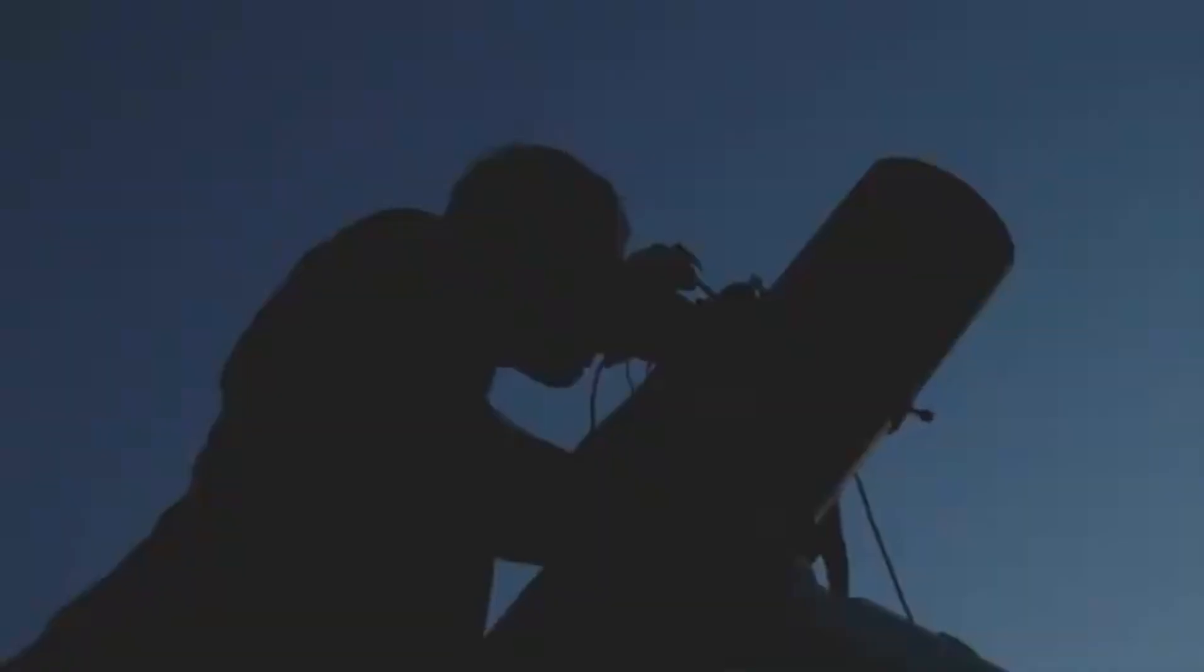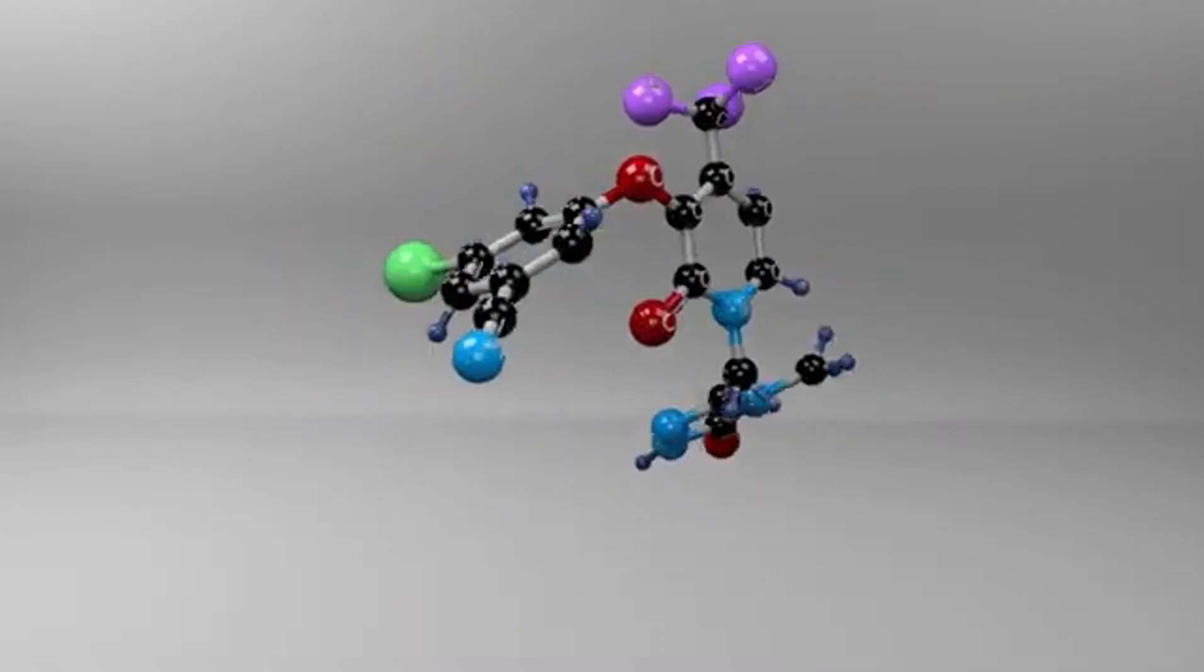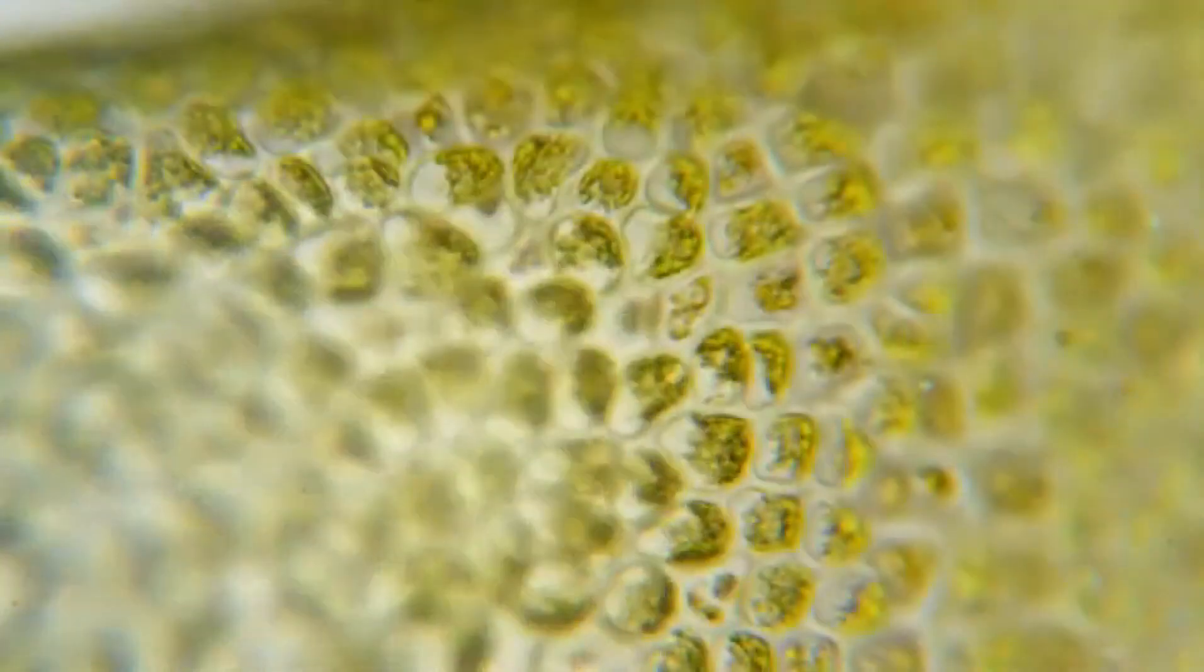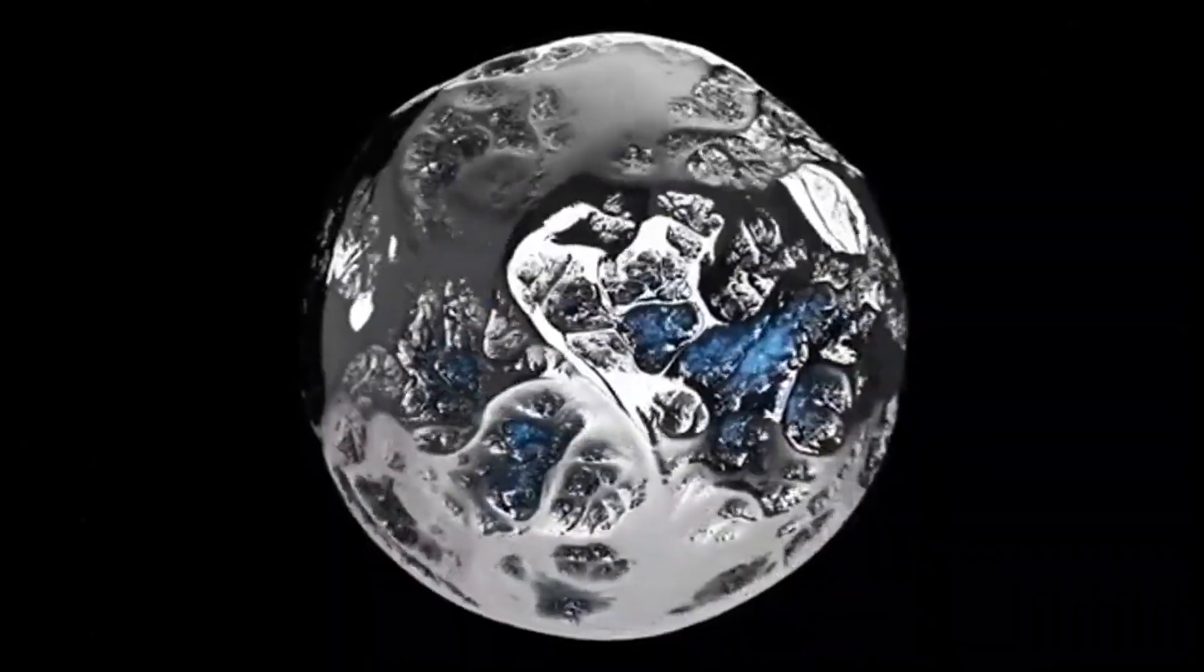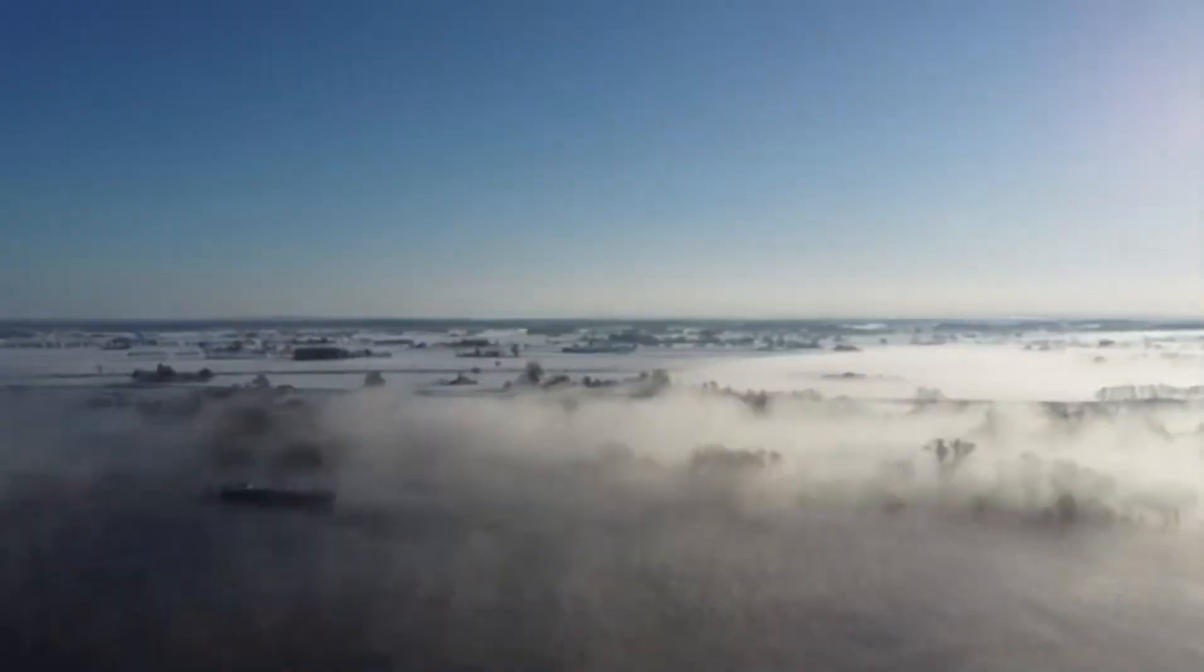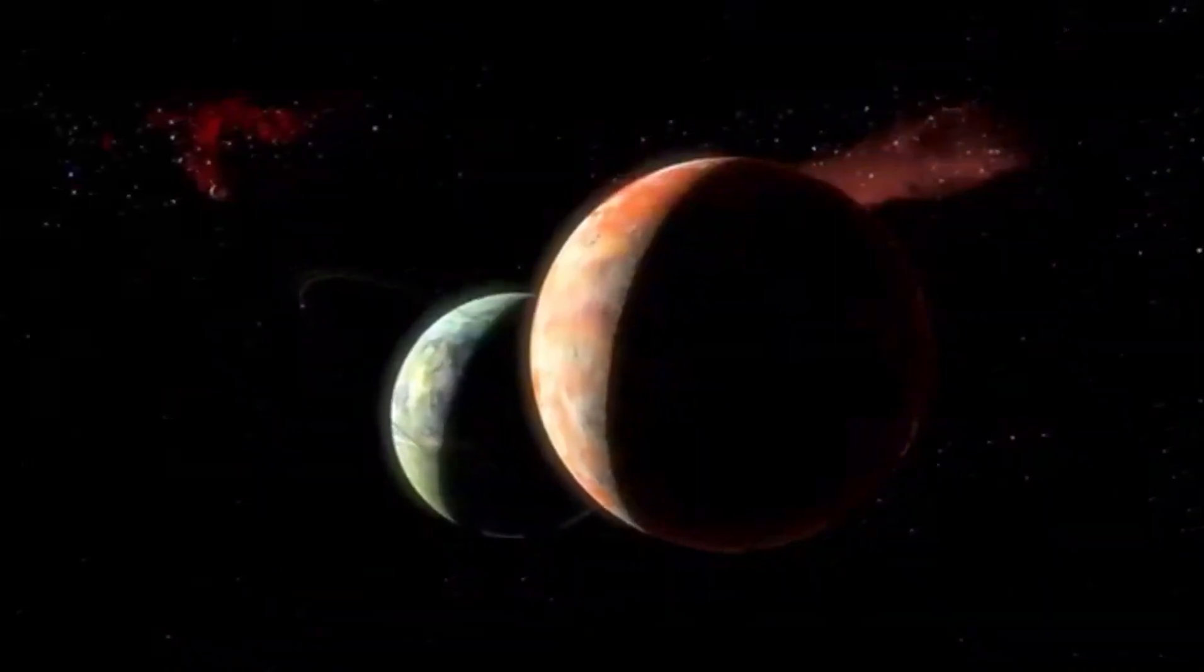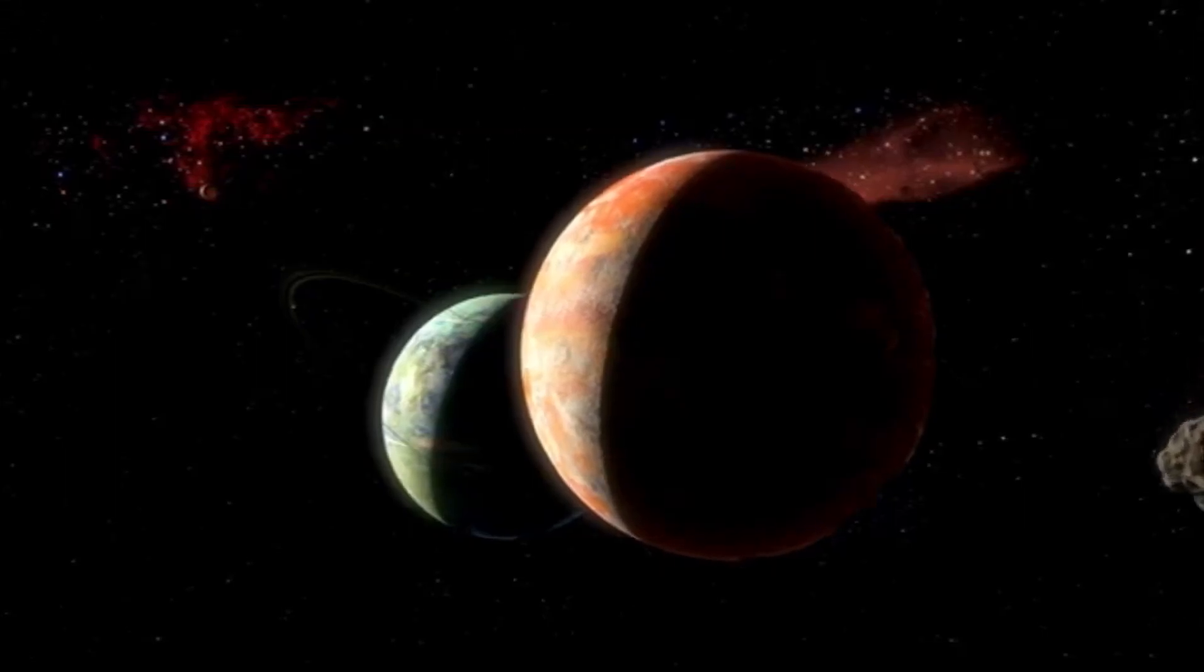What's more, the planet orbits its host star K2-18, a small cool red dwarf, at a distance of just 0.18 astronomical units—closer than Mercury is to our Sun. But because its star is far less luminous than our own, this proximity does not result in extreme heat. In fact, it may provide just the right balance of warmth to maintain liquid water, a fundamental ingredient for life as we know it.